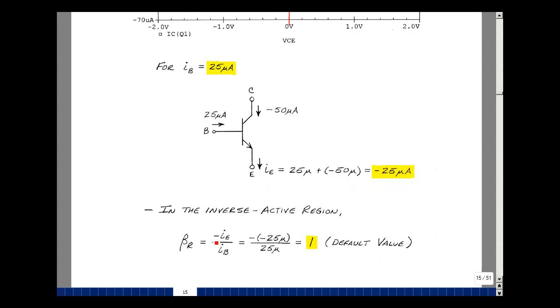Beta r is the ratio of minus I sub e with this definition divided by I sub b. It's going to be a minus, so minus 25 micro over 25 micro, so we get one, and that is the default value of beta r. This is consistent with the equations we believe are programmed in SPICE. And this is a large signal SPICE model for a BJT.